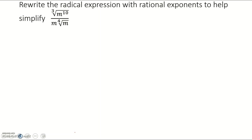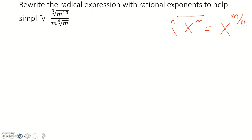Rewrite the radical expression with rational exponents to help simplify. Whenever we have a radical expression and a rational exponent, to go back and forth between the two: if we have the nth root of x to the m power, we could rewrite that as x to the m over n power. Whatever your power is, that's your numerator; whatever your root is, that's the denominator. We can go back and forth between these two expressions.